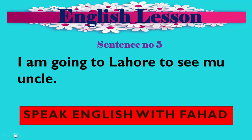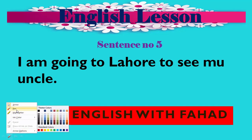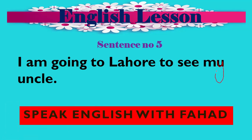Sentence number 5: 'I am going to Lahore to see my uncle.' Here 'to Lahore' — 'to' is a preposition showing direction — the person is going to Lahore. 'To see my uncle' is a separate part showing purpose, where 'to see' is an infinitive. 'Am' is the helping verb, 'going' is the main verb (go + ing), and this is present continuous tense.